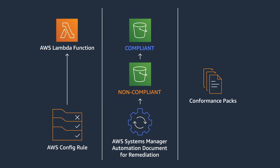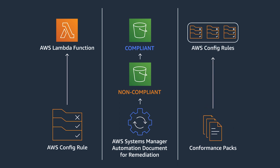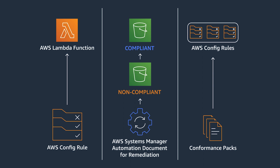The last feature I want to discuss is conformance packs. With Config, you have the ability to bundle numerous rules together as a pack that can be deployed as a single entity known as a conformance pack. These are defined as YAML templates and they are a group of Config rules that are immutable. Users cannot make changes to the rules unless there is an update to the conformance pack. AWS provides sample templates for various compliance standards and industry benchmarks, such as HIPAA security and FedRAMP. There are also conformance packs with Config rules that help with cost management or operational best practices, such as the best practices for Amazon EC2 or for database resiliency.